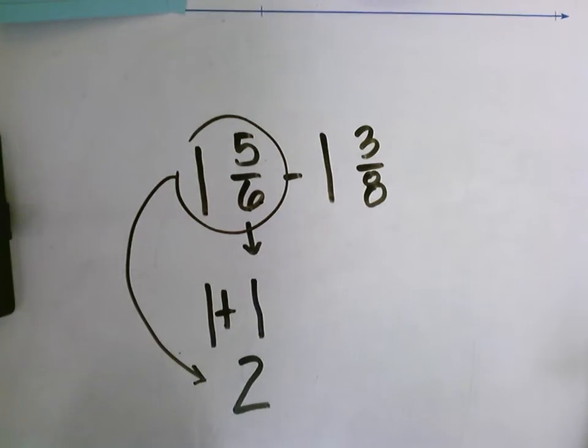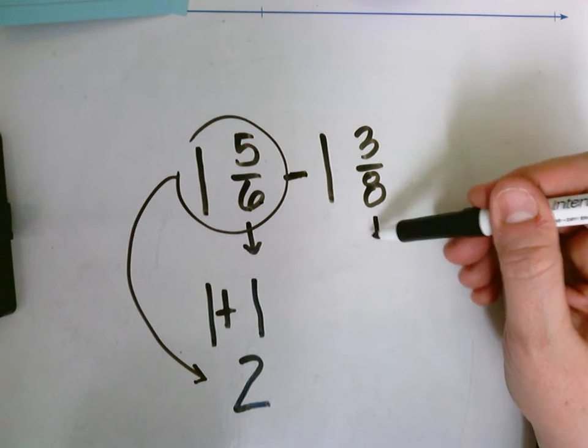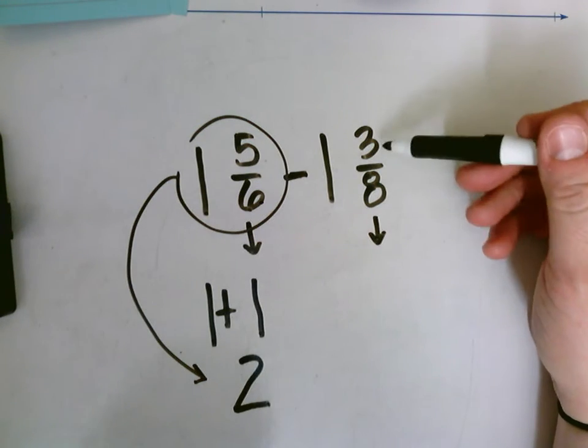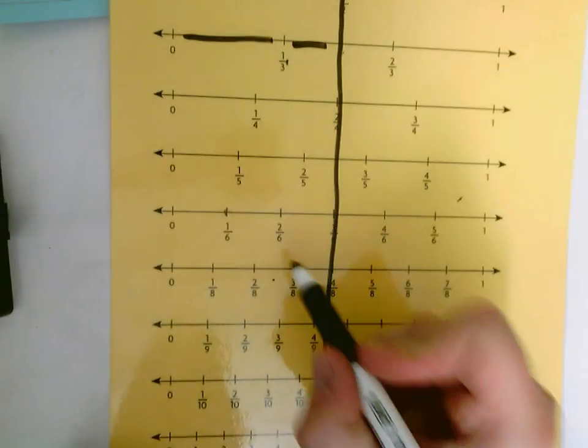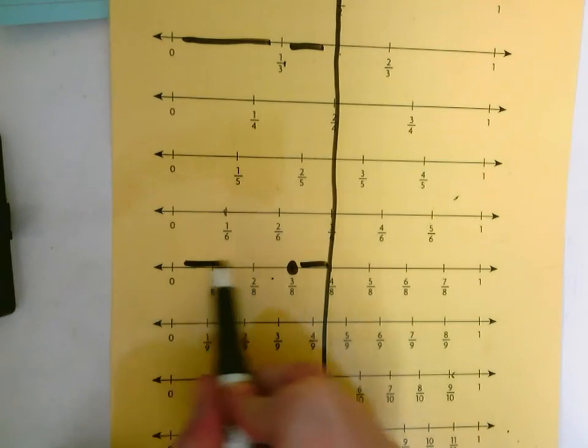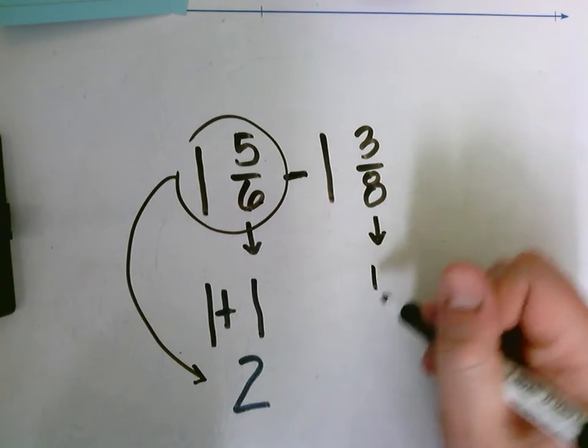Now let's take a look at three eighths. Three eighths, when I compare my numerator and denominator, three is pretty close to half of eight. I look at my number line, here's three eighths. It's definitely closer to half than it is to zero, so I'm going to round that part to one half.